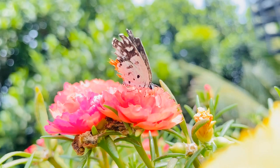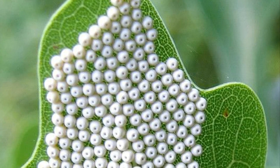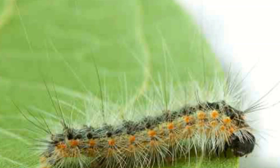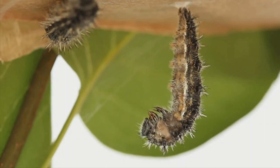Butterflies and moths undergo complete metamorphosis, in which they go through four different life stages. Egg: a butterfly starts its life as an egg, often laid on a leaf. Larva: the larva hatches from an egg and eats leaves or flowers almost constantly. The caterpillar molts many times as it grows, increasing up to several thousand times in size before pupating.